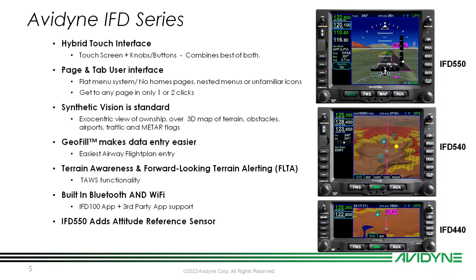We also utilize what's called Geofill, which makes entering your flight plans and airways super simple. It's based off your GPS position, and as you're entering waypoints, airports, navaids, or anything into your flight plan, it's always giving you the best guess based on your position. We find that it significantly reduces the amount of button pushes, knob turns, and clicks needed to enter a flight plan.